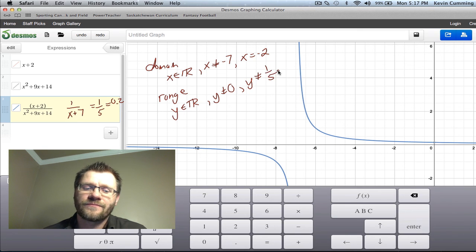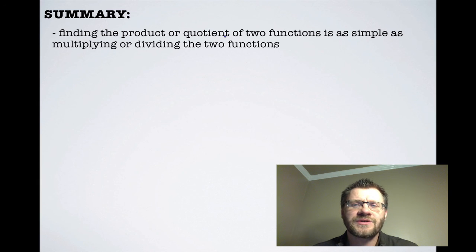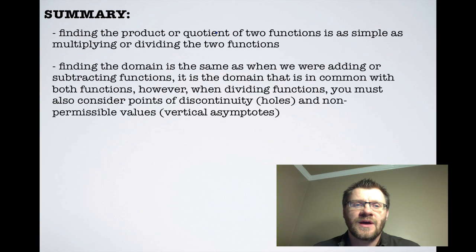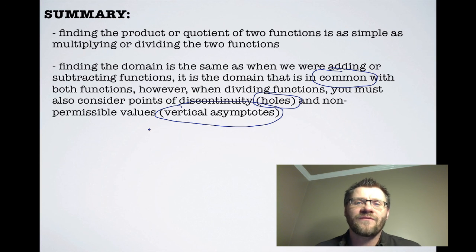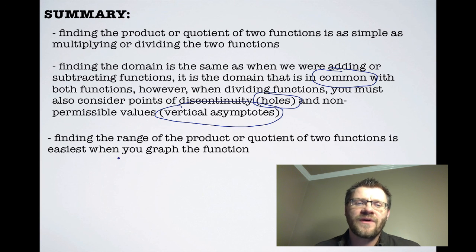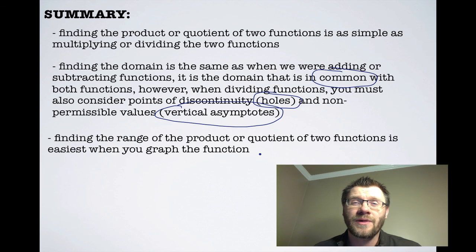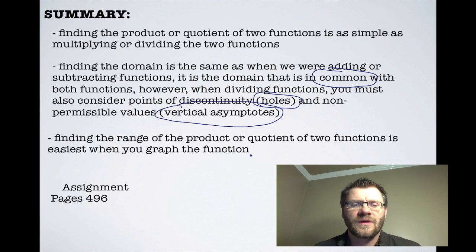In summary, finding the product or quotient of two functions is simply multiplying or dividing them. The domain is the common domain of both functions; for quotients, also consider holes (cancelled factors) and vertical asymptotes (remaining denominator factors). The range is easiest to find by graphing — using a table of y-values or graphing software. Your assignment is on pages 496 to 498. Good luck!